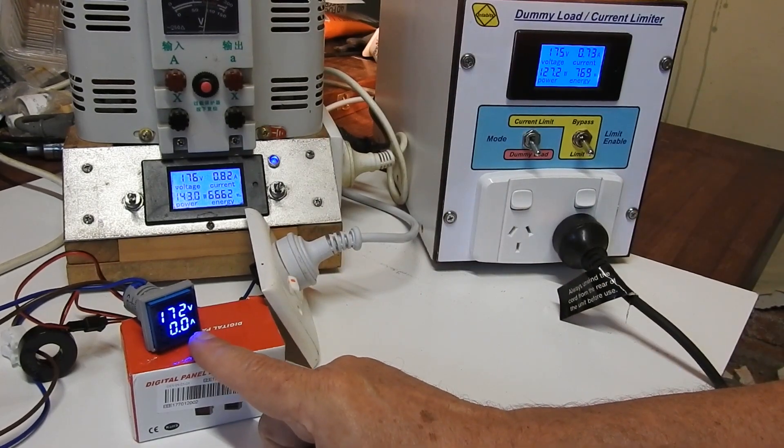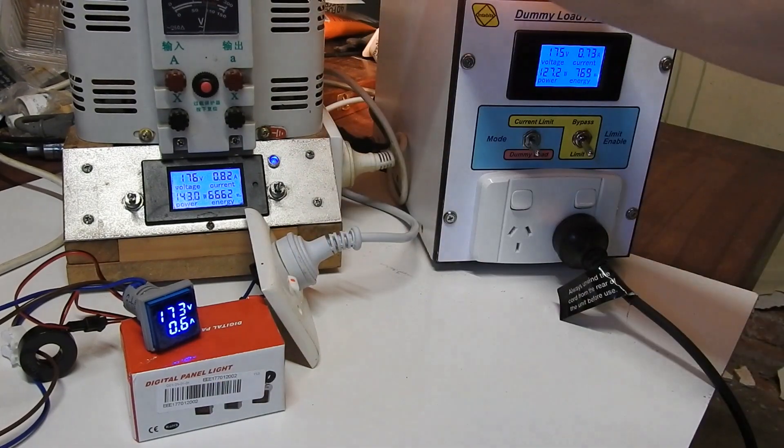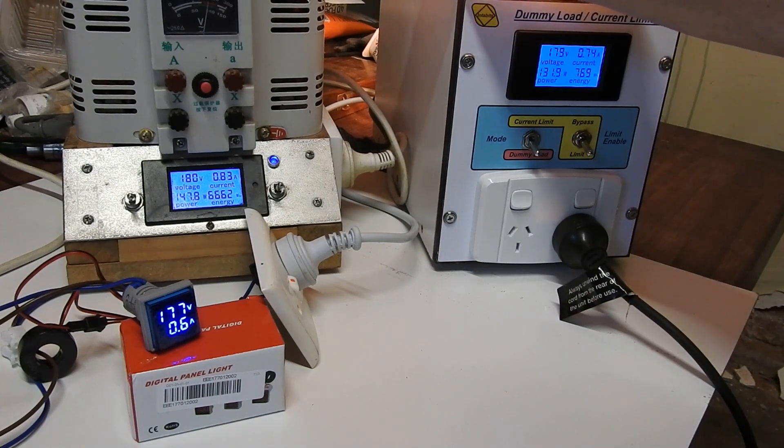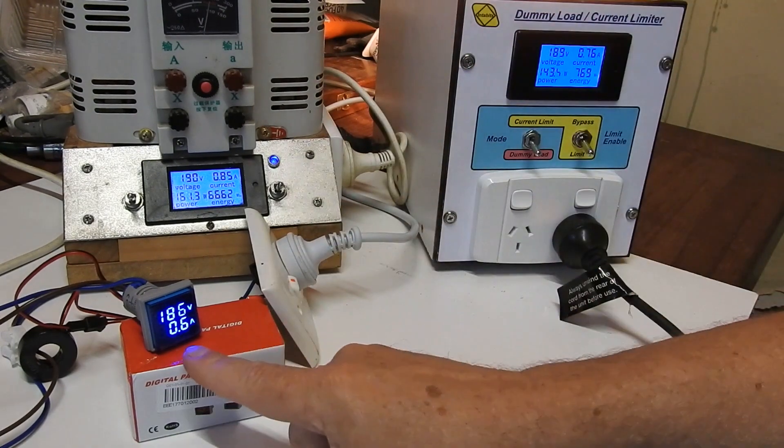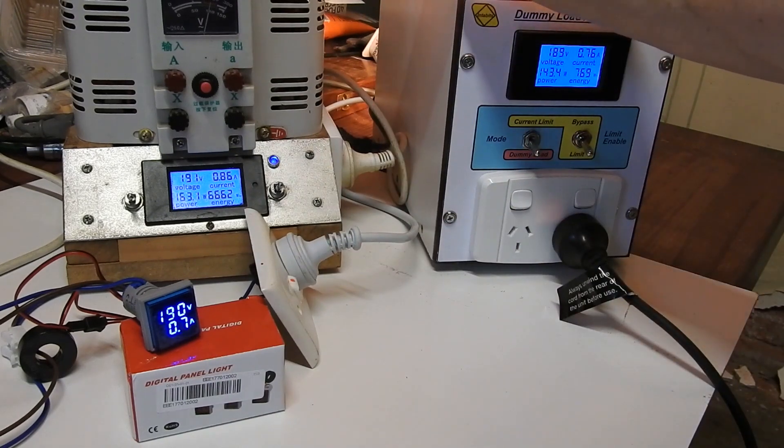So that's with something like 0.7 or 0.8 actual current. These things don't work unless they've got at least 700 milliamps, 800 milliamps running into them. And then they're not very accurate. So that's a bit disappointing.